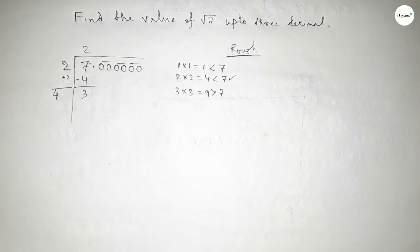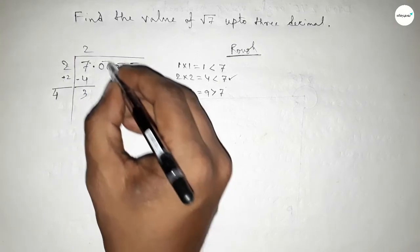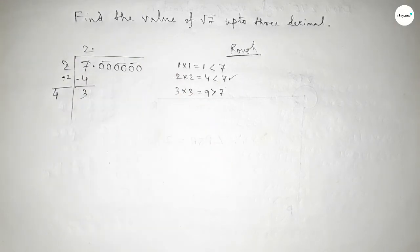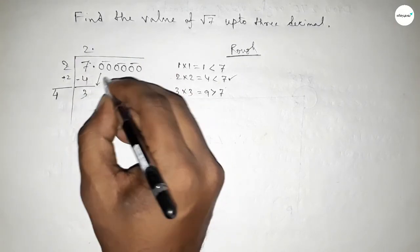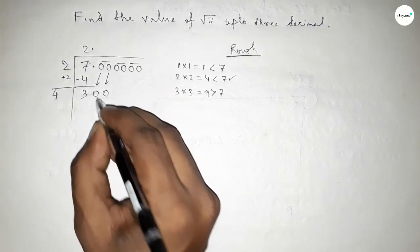Putting 2 here. So 2 squared is 4. Now subtracting — this gives remainder 3. Now we add the last digit 2 to itself: 2 plus 2 gives 4. This point is here. Now bringing down the next pair of zeros.